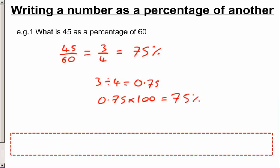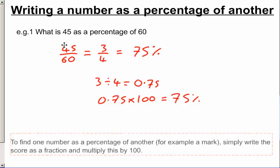So in short, what we do is we write the score as a fraction, 45 out of 60, and then multiply by 100. We can convert it into a decimal first. But if we've got our calculator, which we would do for the nastier ones anyway, we just do the fraction and multiply it by 100.